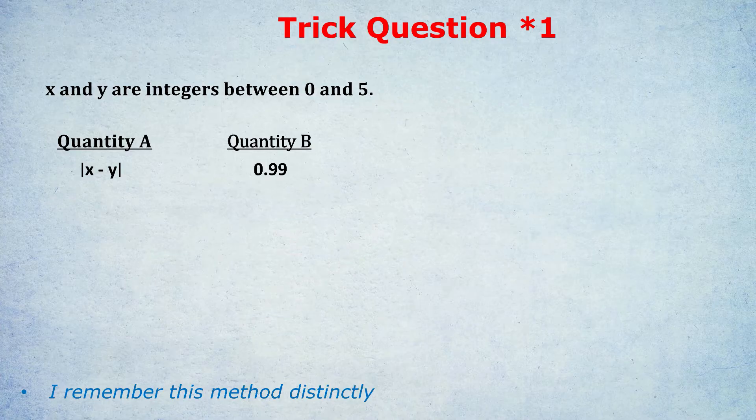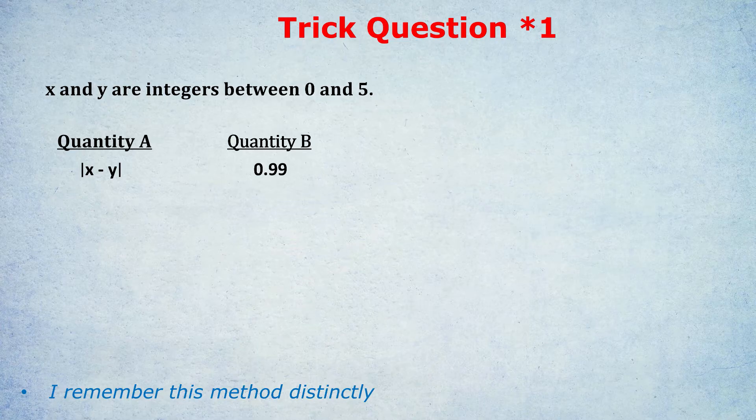They would try out 5 and 0, and they'd notice that 5 minus 0 is 5, and the absolute value of 5 is just 5, so Quantity A is bigger. By the way, the absolute values, which I've covered in a different video, just turn what's inside into a positive if it wasn't before. So to do another example, if x was 3 and y was 5, 3 minus 5 is minus 2, but the absolute values turn the minus 2 into a 2.